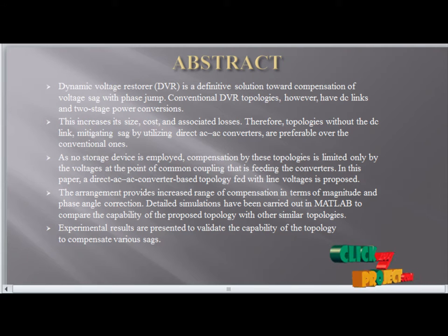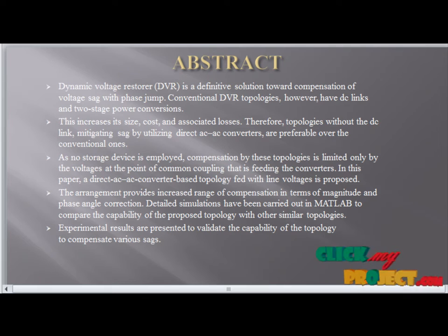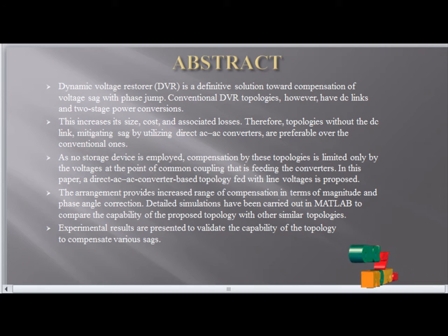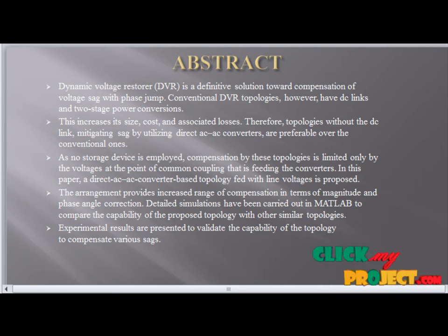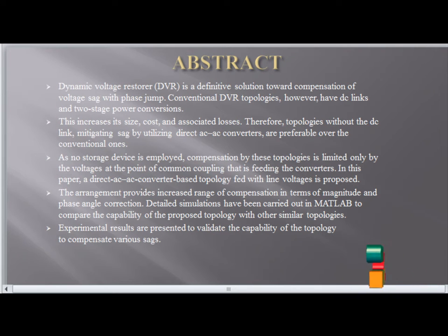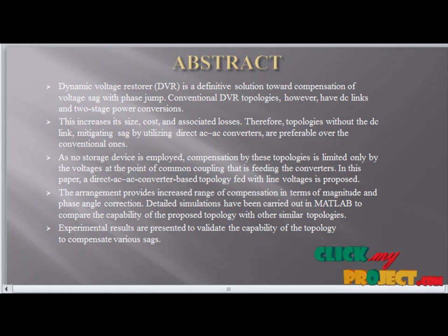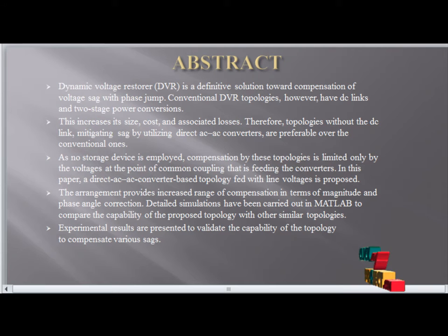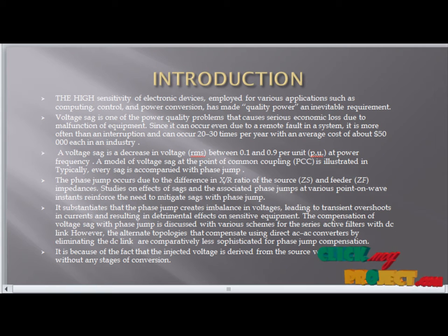At the point of common coupling feeding the converters, in this paper a direct AC to AC converter based topology fed with the line voltage is proposed. The arrangement provides an increased range of compensation in terms of magnitude and phase angle correction. A detailed analysis has been carried out on the capability of the topology to compensate various sags.